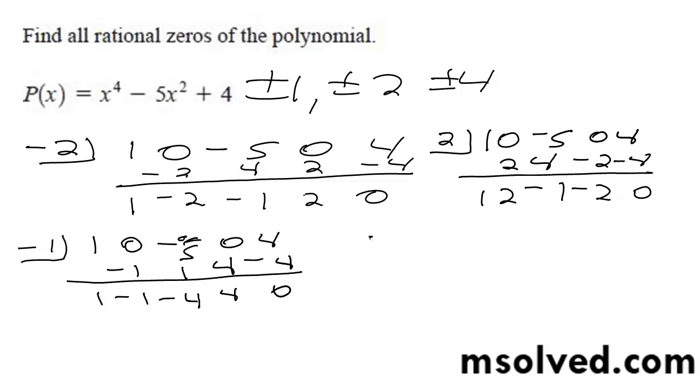And then we'll try 1, so 1, 0, negative 5, 0, 4, and I get 1, 1, 1, negative 4, negative 4, negative 4, 4, excuse me, negative 4, 0.